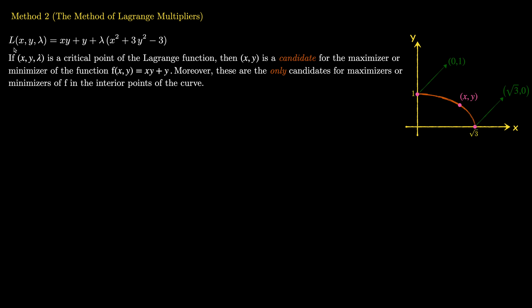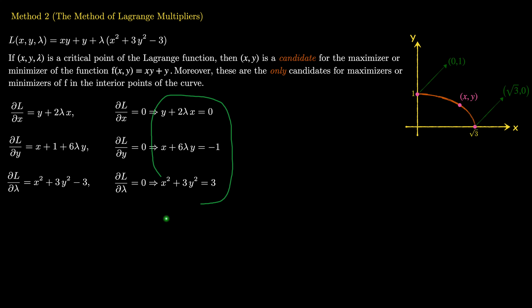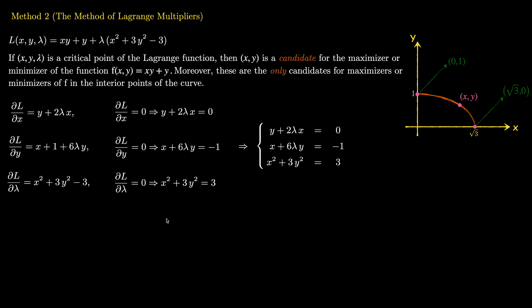To find the critical points, I differentiate L with respect to x, y, and λ and set each partial derivative to zero. This gives the system: y + 2λx = 0, x + 1 + 6λy = 0, and x² + 3y² = 3. I have three equations and three unknowns: x, y, and λ.